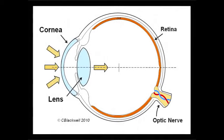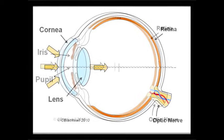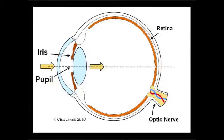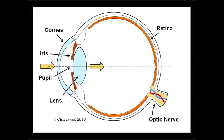This is a diagram of the eyeball, starting from the window. The cornea is a window that lets light into the eye. In the middle of the eye is called the pupil, which controls how much light enters the eye. Inside the eye is the lens, which can focus like a lens of a camera.